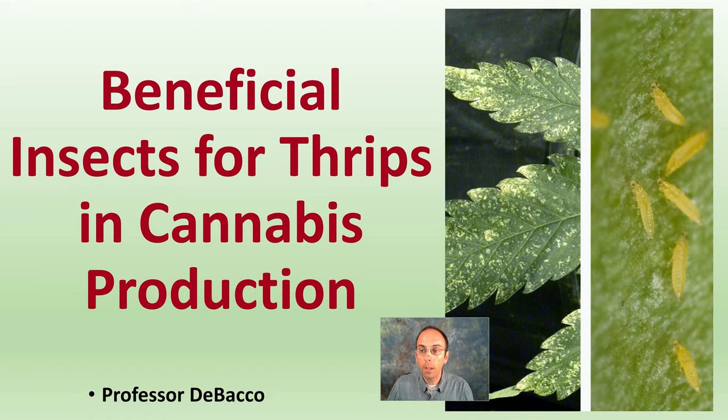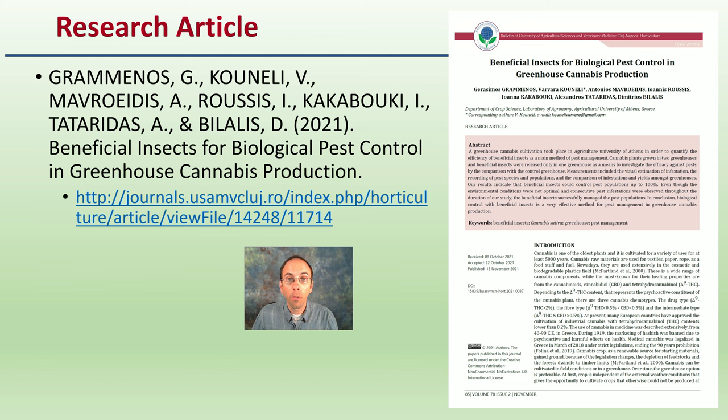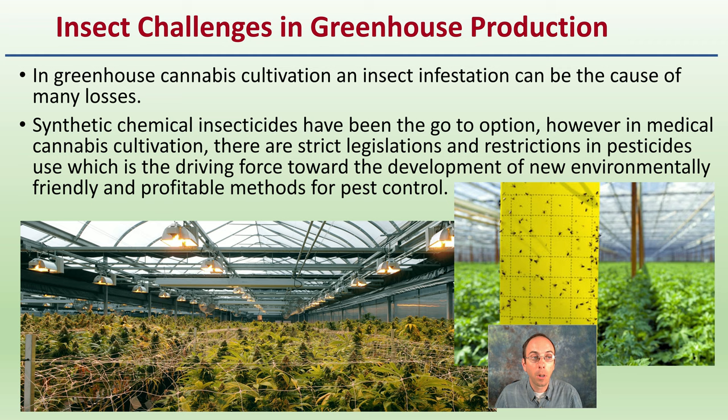This is based off a research article, so you're welcome to follow this reference and citation for more details into the materials and methods utilized as part of this study. Insects can be a challenge in general for greenhouse production and can cause many losses economically and environmentally. Synthetic chemicals have been the go-to option, but there are many restrictions using these forms of pesticides. This is the driving force for the development of new, environmentally friendly, and profitable methods for pest control.